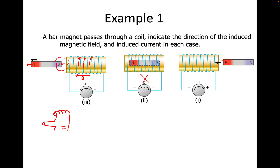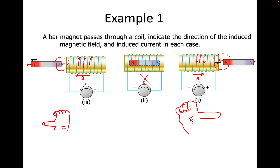Now if the north pole is entering, the field is pointing to the left — into the south, of course — but I'm only looking at this side. The field is going to the left and getting stronger, which means it will be going to the right for the induced field. Looking at my hand with fingernails visible, the current will be coming down. So my thumb points to the right and my fingers come down — that's the direction of the current.